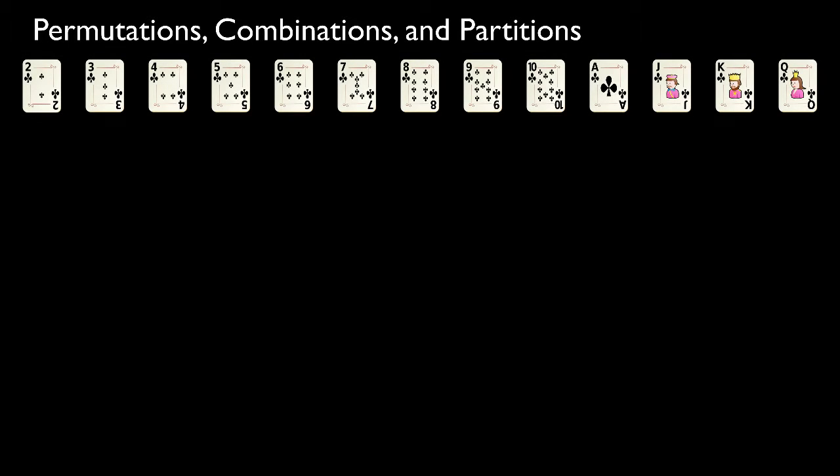We'll begin our discussion about permutations, combinations, and partitions by looking at the ways in which we can select a subset of objects from a larger collection of objects. To illustrate the basic principles, let's consider this collection of 13 cards, which consists of all the cards from a common deck that are marked with the club symbol. What we'd like to do now is examine all the ways we can select 5 cards from this collection of 13.